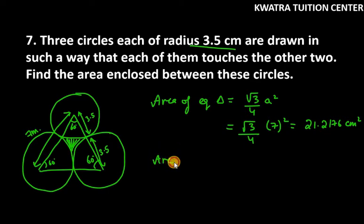Now let's find the area of 3 sectors. For 3 sectors, I will multiply the formula with 3. So this is 3 × θ/360 × πr². θ is 60, π is 22/7, and r in this case is 3.5.